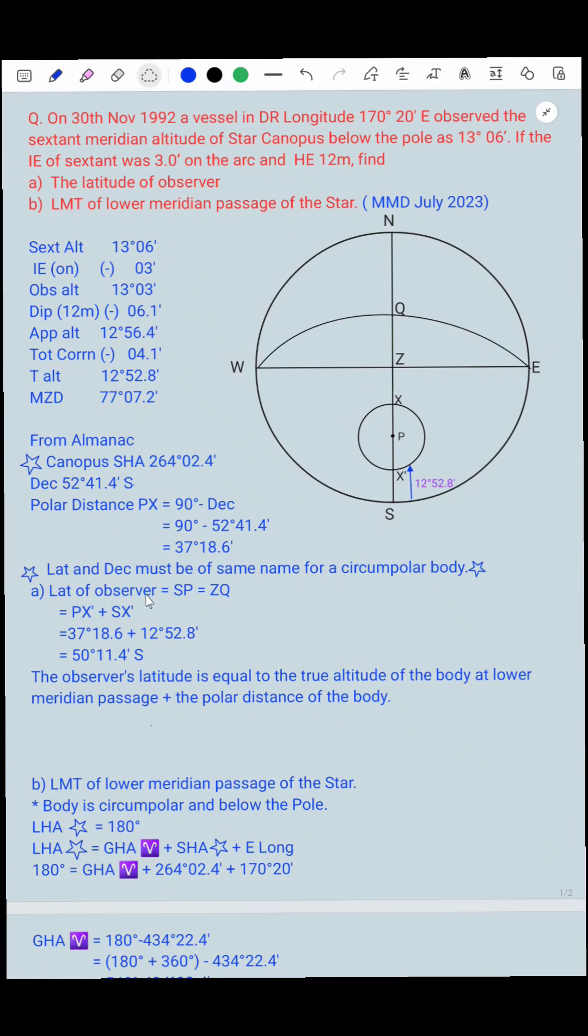So latitude of the observer is equal to SP. Latitude of observer is also equal to ZQ. Latitude of observer is equal to SP, which is equal to PX dash, which is polar distance plus SX dash. There is polar distance we have calculated here, and polar distance is 37 degrees 18.6 minutes plus 12 degrees 52.8, and there is SX dash, which is equal to 50 degrees 11.4 minutes south.